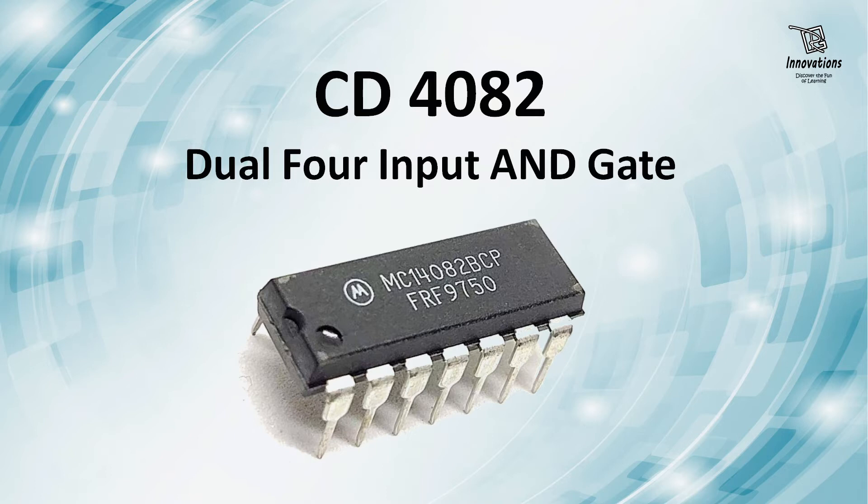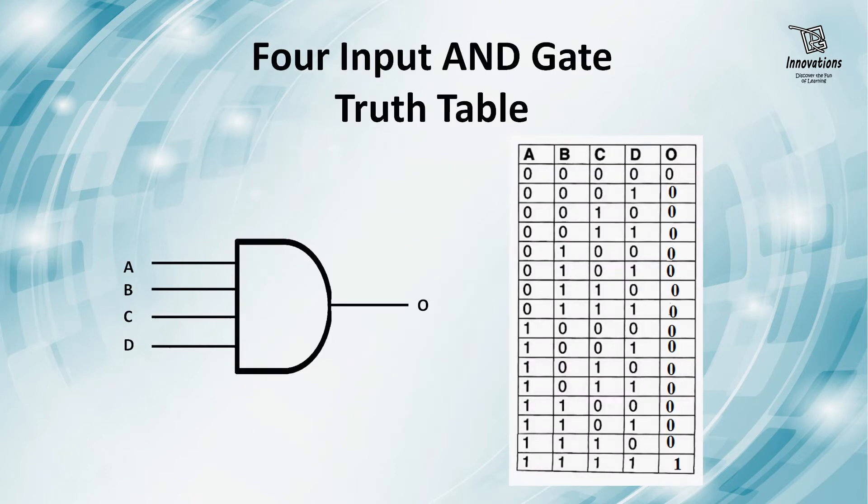So let's first have a look at the truth table of a four input AND gate. Here you can see the schematic of a four input AND gate. A, B, C, D are inputs and O is the output. So if we consider the truth table, we can see when any of the inputs or all the inputs are zero, the output is zero in all the cases. Only when all the inputs are one, the output is one. Otherwise, in every case the output is zero or low.